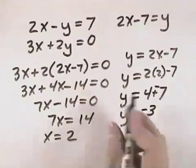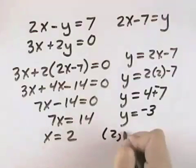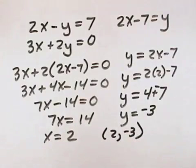So our solution is x equals 2, y equals negative 3, or as an ordered pair, that would be the ordered pair 2, negative 3.